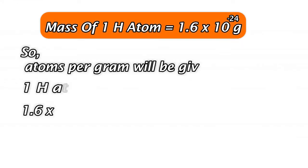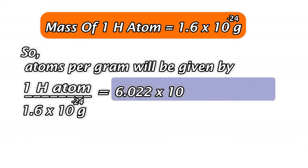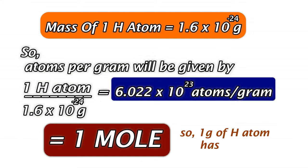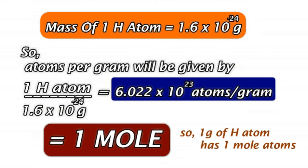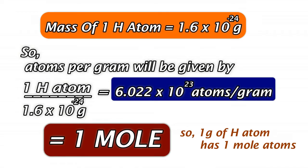So, the atoms per gram will be given by the inverse of the mass, which is equal to 6.022 × 10^23. It means that 1 gram of hydrogen contains 1 mole of hydrogen atoms.